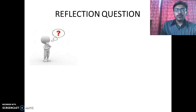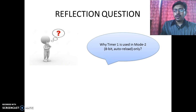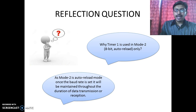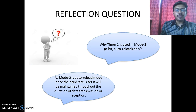Now pause this video for 30 seconds and think about this question: why is Timer 1 used in Mode 2 only, and not in any other mode? The answer is that since Mode 2 is the auto-reload mode, once the baud rate is set it will be maintained throughout the duration of data transmission as well as reception. That is why Timer 1 is used in Mode 2.